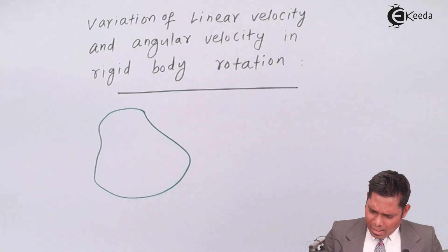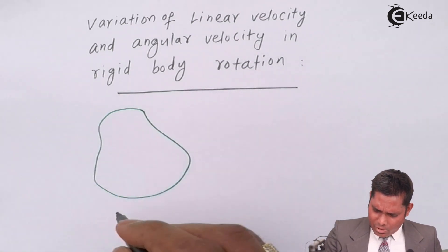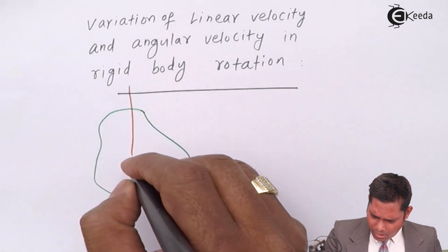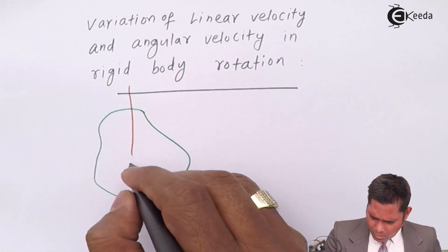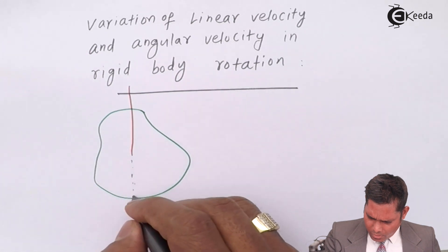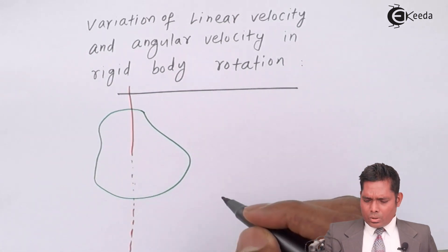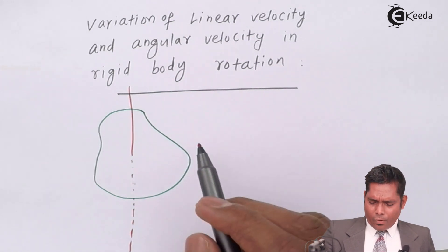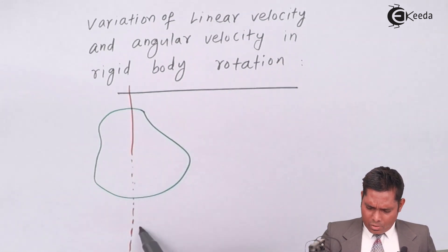Suppose that I have an object like this, it is a rigid body rotating about this axis. This is the axis of rotation.